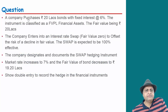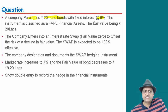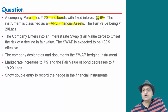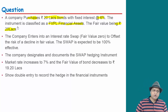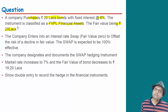Now, a company has invested in 20 lakh bonds. The fixed rate of interest is 6%. This instrument is classified as fair value through profit and loss financial asset. When the company invested, the fair value was 20 lakhs. Now the company is afraid it will lose value.